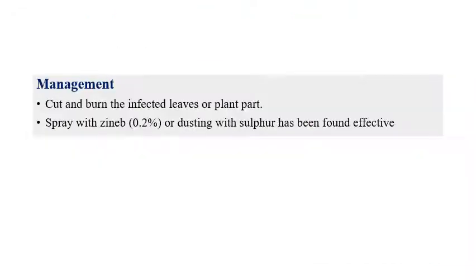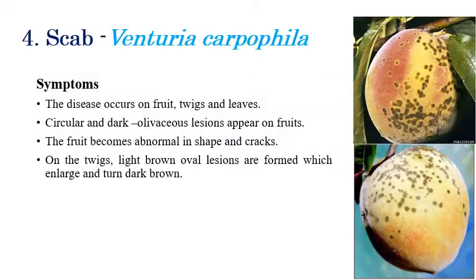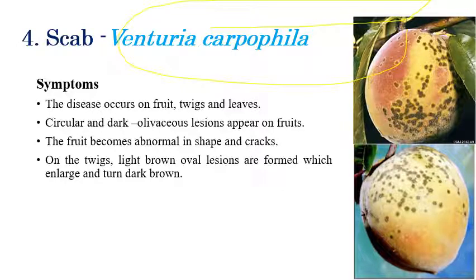For management of rust, cut and burn the infected plants, and spray zineb 0.2% and dust sulfur for effective control. The next disease is scab, caused by Venturia carpophylla, which mainly infects fruits, twigs, and leaves.